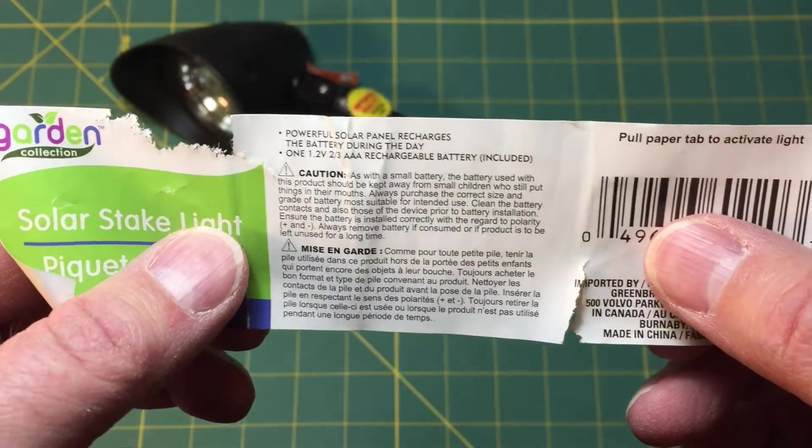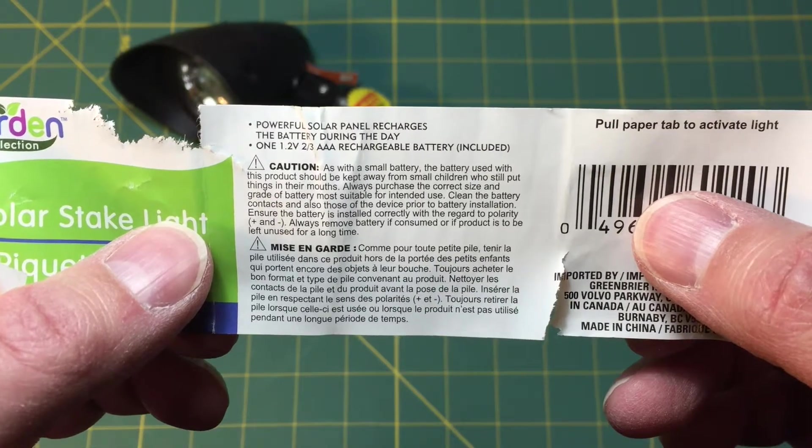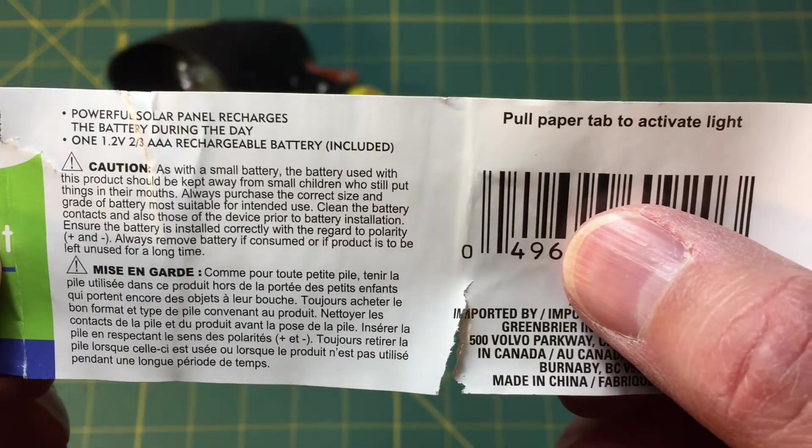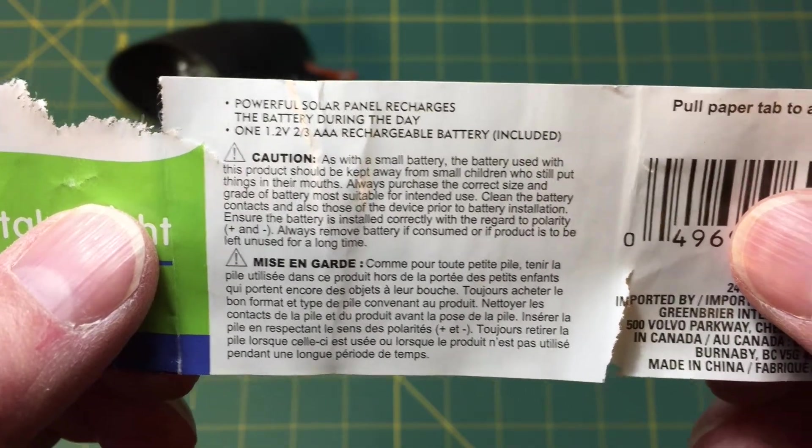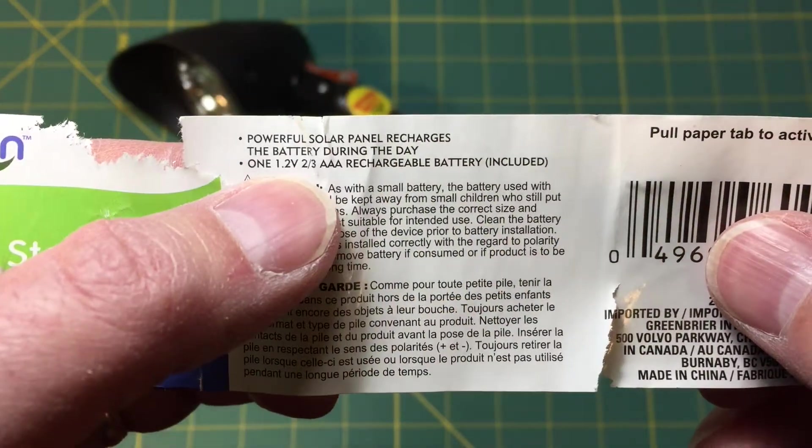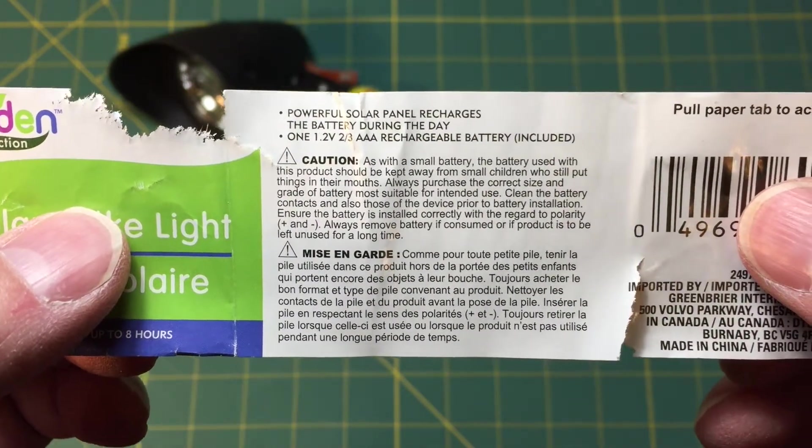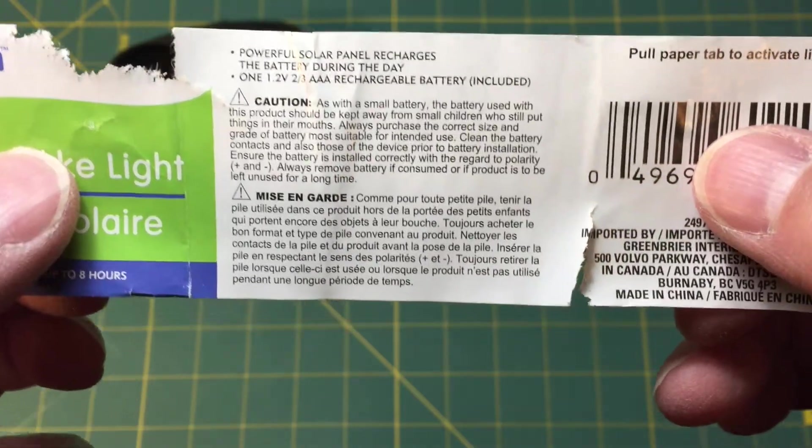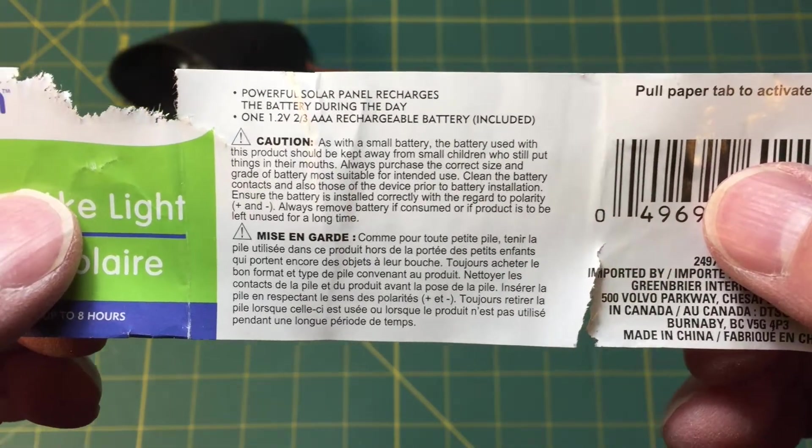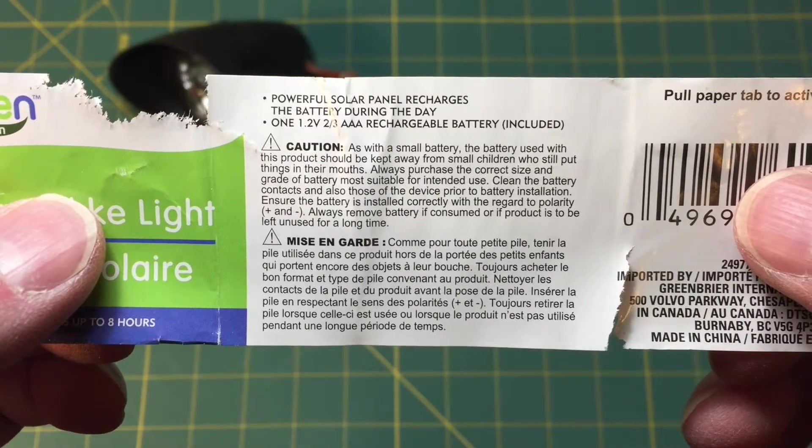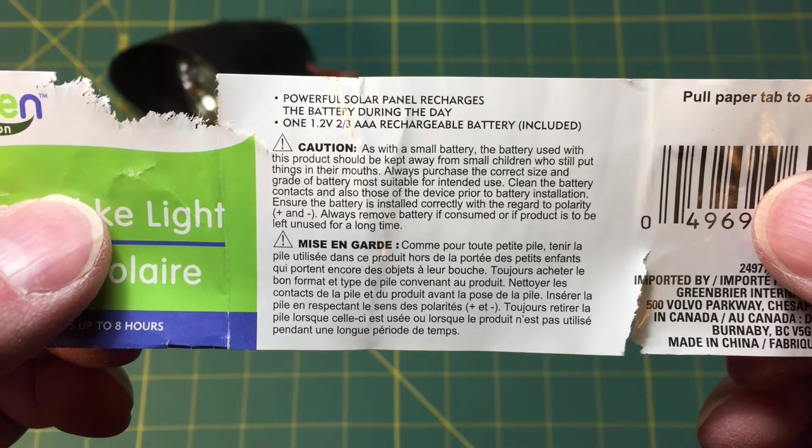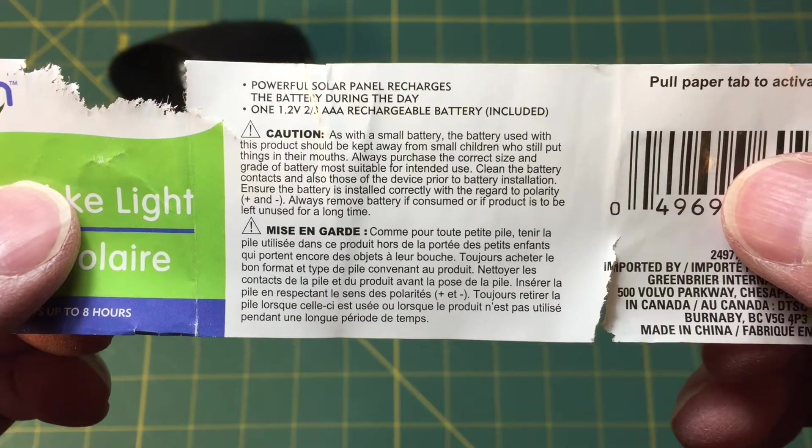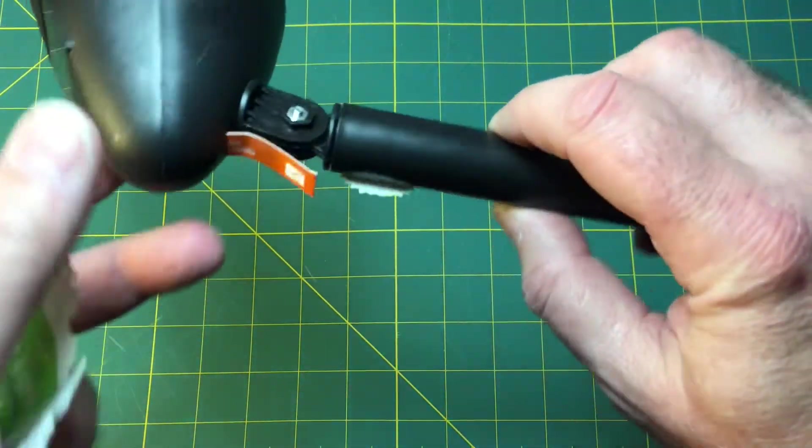I've removed the label so we can read this better. It says powerful solar panel recharges the battery during the day, one 1.2 volt two-thirds triple A rechargeable battery included. I don't know if that means two or three or it's two-thirds of a triple A cell. It's probably not going to be a lithium cell, probably nickel metal hydride. There are caution warnings about the battery - keep away from small children, purchase correct size and grade, clean the battery contacts. It's a lot of warnings about the battery but I don't really see any way to access the battery unless you take this apart.